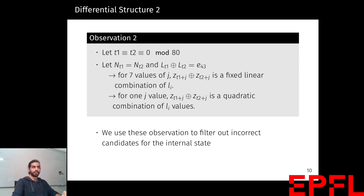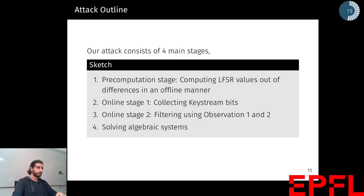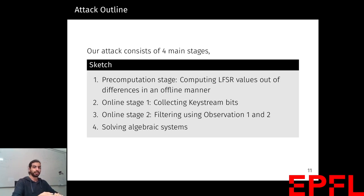We use these observations to filter out incorrect candidates for the internal states in our attack. Our attack has four main stages: first, an offline pre-computation stage where we compute LFSR values from differences between LFSR values and time differences; second, an online stage where we collect many keystreams satisfying a certain hypothesis; third, a filtering phase where we keep good pairs; and finally, stage four where we generate algebraic systems from these good pairs and solve those systems.